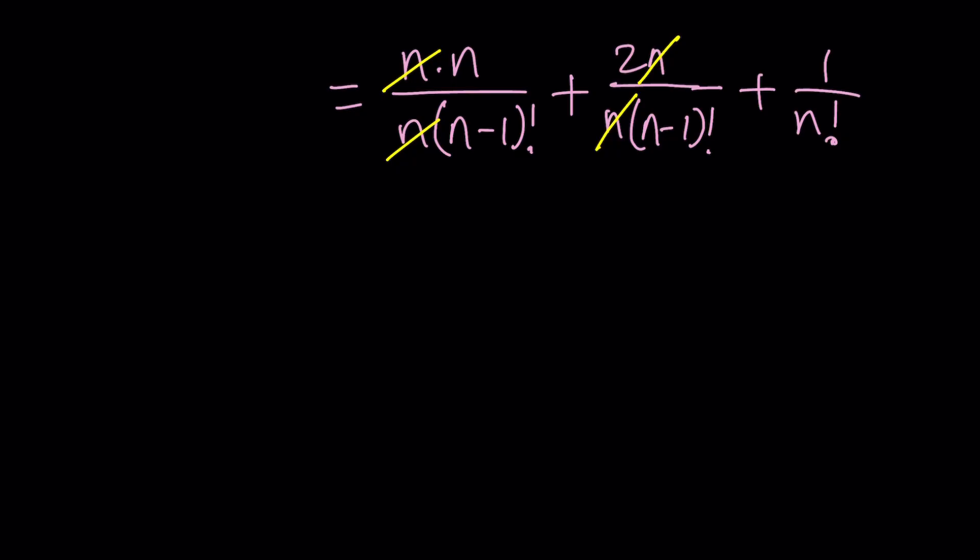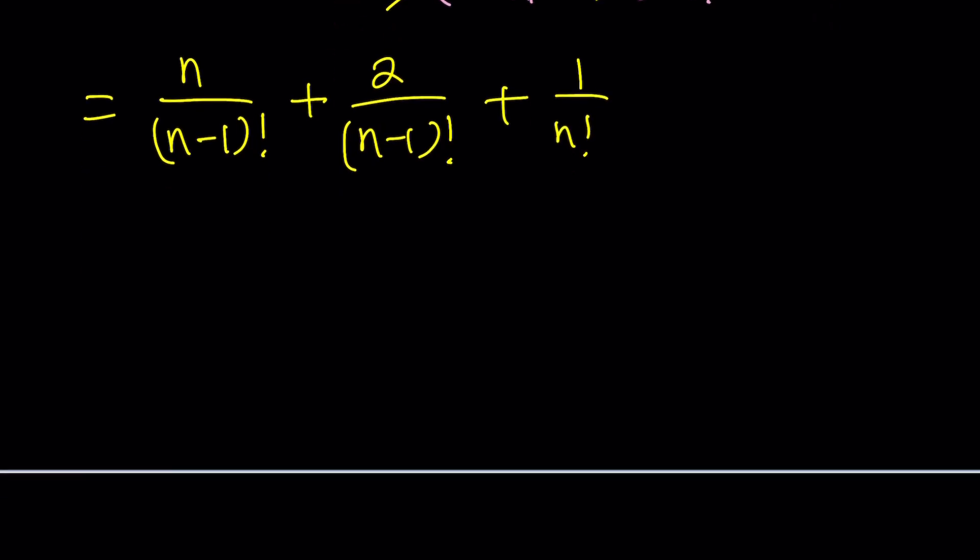You get something like this: n over (n-1) factorial, 2 over (n-1) factorial, and 1 over n factorial. Now we're going to get into the sum of each of these, but before that I want to do something else. What is that? I'm going to expand this one more time—I'm going to write it as (n-1) plus 1 so that I can simplify with the denominator.